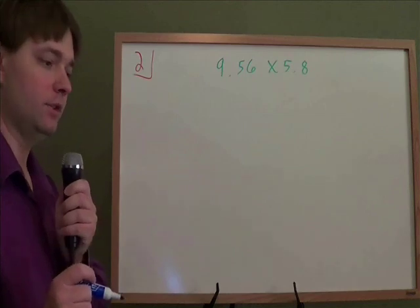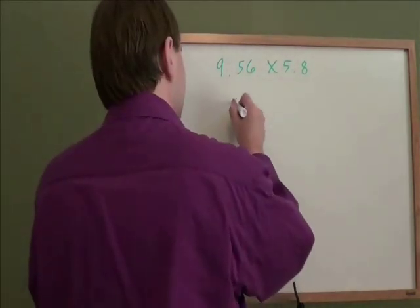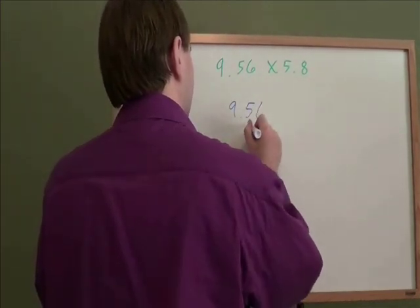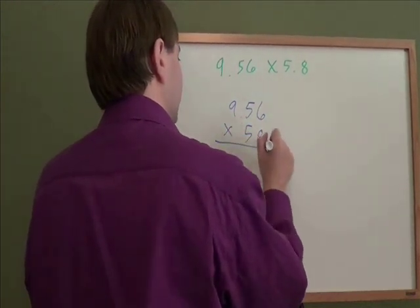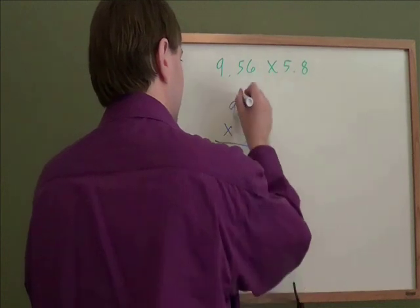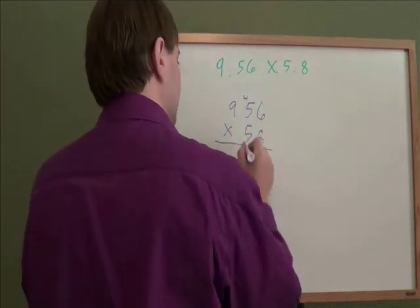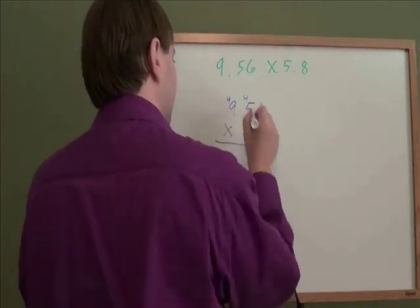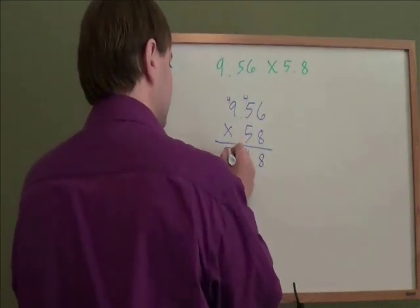When you are multiplying decimals, you will multiply like usual for most of the steps. You don't need to line the decimals up when you're multiplying, but you will need to do something at the end. So we just multiply like usual. 8 times 6 is 48, carry the 4. 8 times 5 is 40, plus that 4 is 44. Put a 4 down, carry the 4. 8 times 9 is 72, plus 4 is 76.